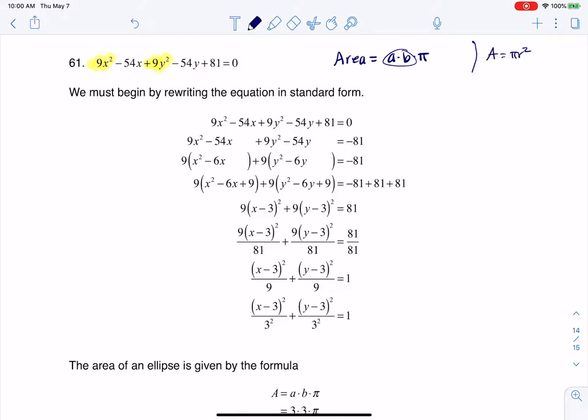So this is going to be a pi r squared situation, because this will literally be three times three times pi, which is pi times three squared, and three is going to be our radius, but how we get there, that's a little bit more fun.